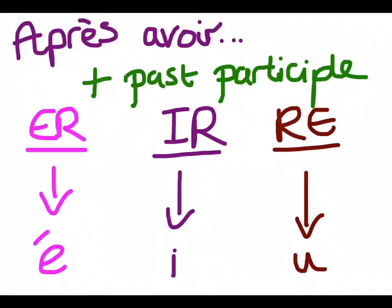As a quick reminder: if you have an -er verb, to make a past participle you remove the -er and add an é with an accent. If you have an -ir verb, you remove it and add an -i. And if you have an -re verb, you remove the -re and add a -u.